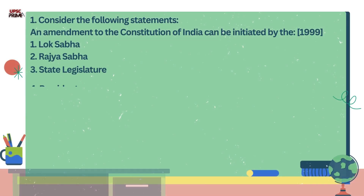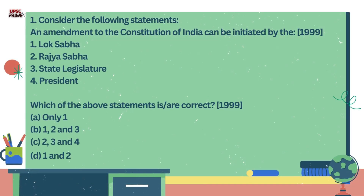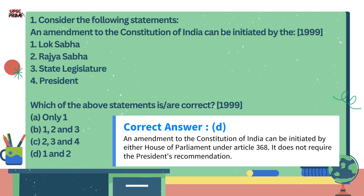Question number 1. Consider the following statements. An amendment to the constitution of India can be initiated by: 1. Lok Sabha, 2. Rajya Sabha, 3. State Legislature, 4. President of India. Which of the above statements are correct? The correct answer is option D. An amendment to the constitution of India can be initiated by either House of the Parliament under Article 368.